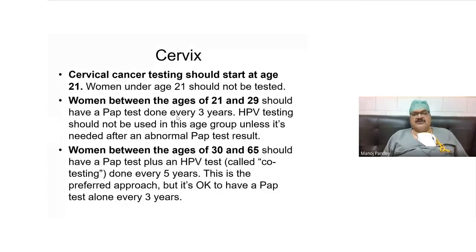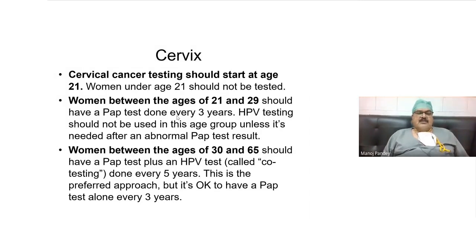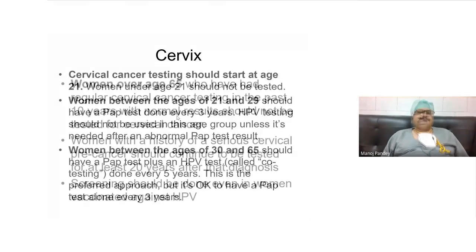Cervix is one of the commonest cancers in this part of the world. Cervical cancer testing should start at the age of 21, and women under 21 should not be tested. Between 21 and 29, it should only be a pap smear — HPV testing is not recommended up to 29 years. For women above 30, they should have co-testing: a pap smear plus an HPV test, done every five years, though some recommend every three years. Ideally, every woman above 21 should have a pap smear, and above 30, pap smear plus HPV co-testing.